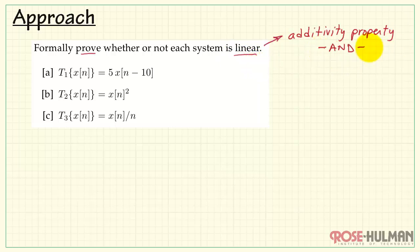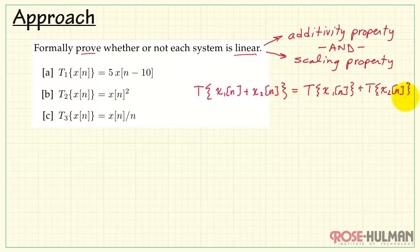Well, we need to establish what's called the additivity property as well as the scaling property. The additivity property says that a system operating on the sum of two input signals, X1 and X2, can also be written as the system operating on each of these input signals and then added together.